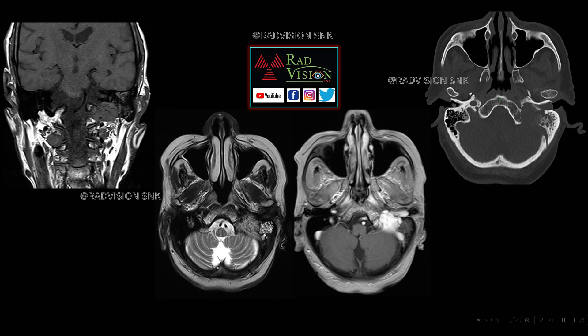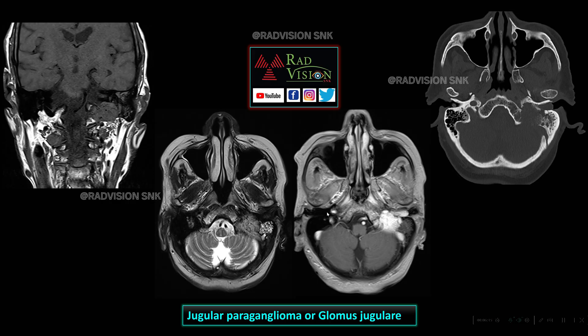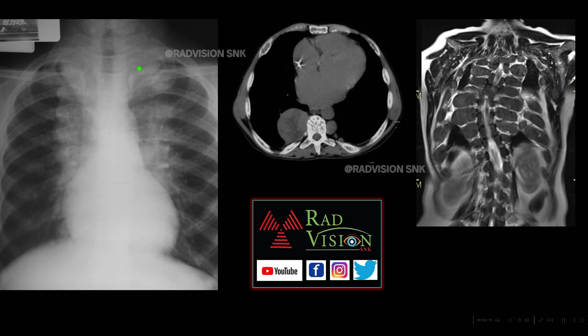Jugular paraganglioma can clinically present — due to cranial involvement of nerves 9, 10, 11 — as Vernet syndrome. If nerves 9, 10, 11, and 12 are involved, it is Collet-Sicard syndrome. Horner syndrome can also present. Also remember the carotid body tumor or carotid paraganglioma, where you can see the lyre sign.